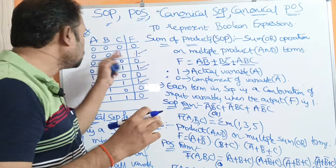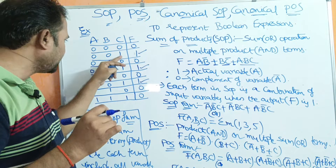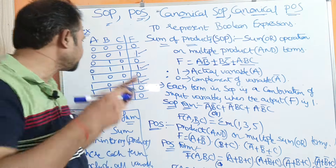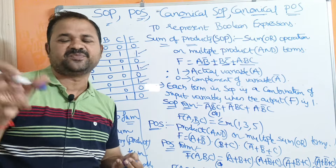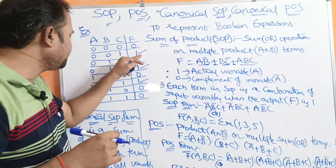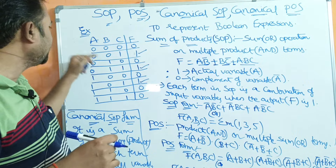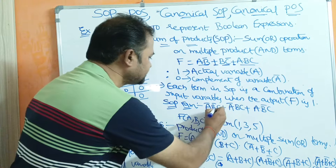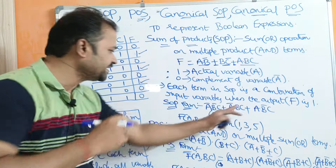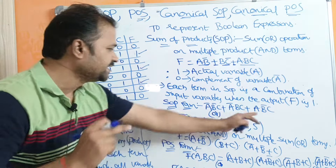In SOP, 1 means the actual variable, whereas 0 means the complement of that variable. So the first combination 001 gives us A bar, B bar, C — this is the first product term. The second term is A bar, B, C. The third combination gives us A, B bar, C.